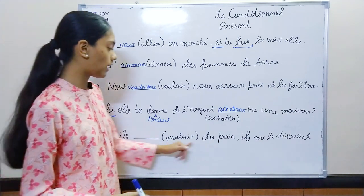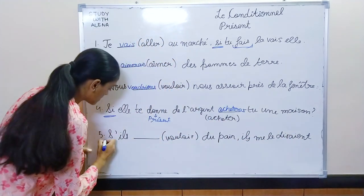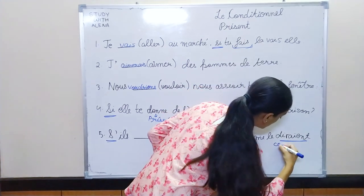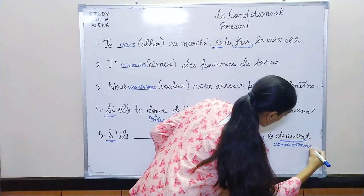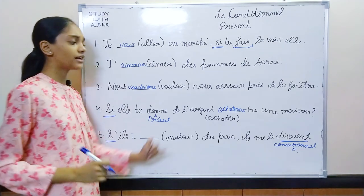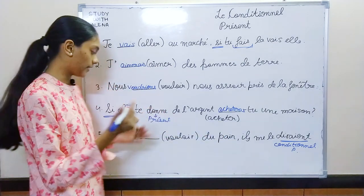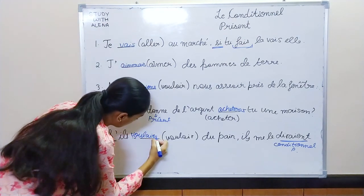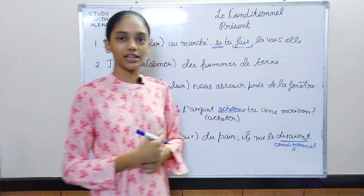Last one: s'il dash vouloir du pain, il me la dirait. We have si and dirait is in conditional present. So si plus dash plus conditional present — that means we need imparfait. So we write vouloir in imparfait: s'il voulait du pain, il me la dirait.